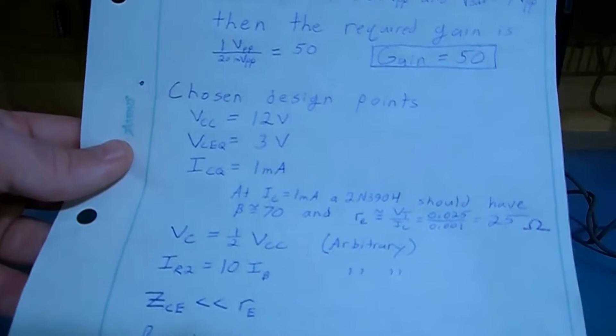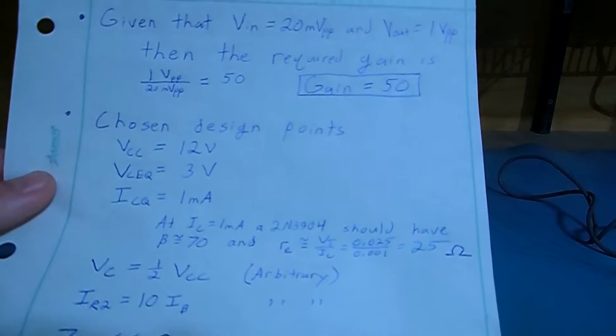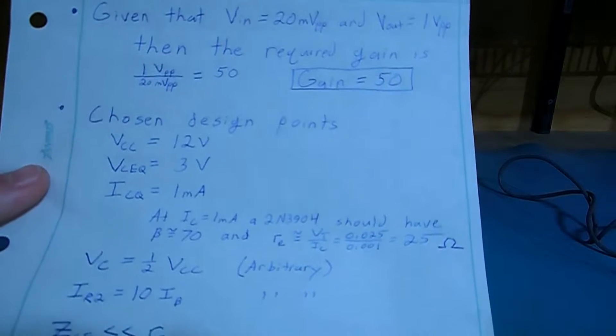And then also we can calculate one other value called little re, which typically is ignored in the original circuit that I showed you. But in this circuit we're going to build, if you ignore it, you will have significant error in your gain.